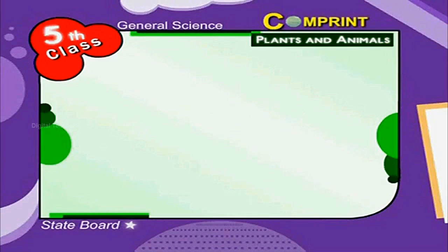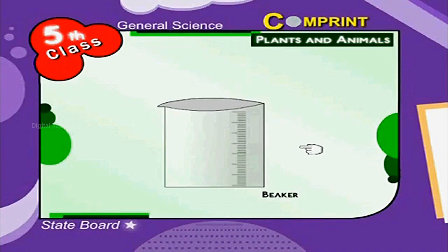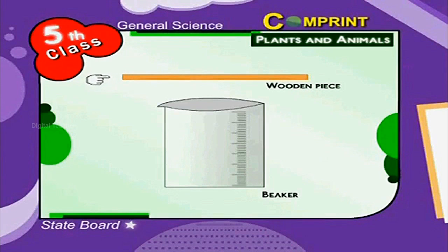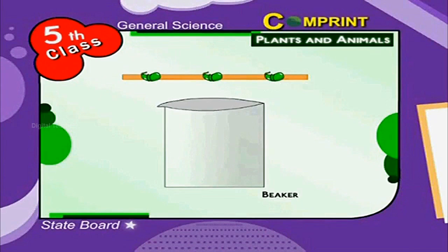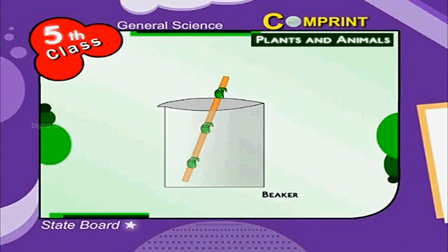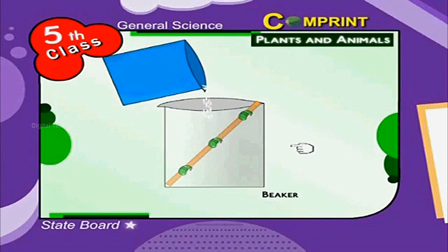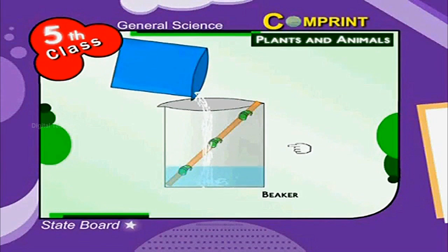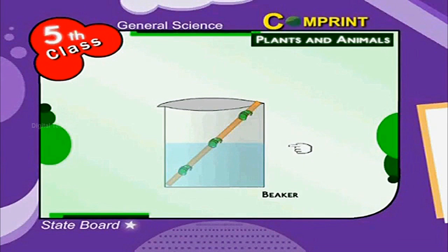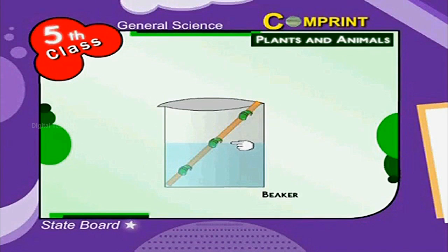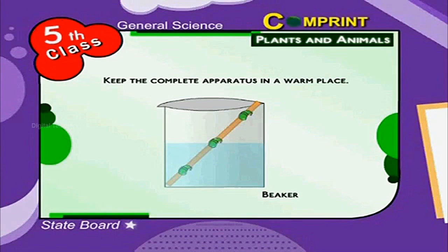Look at the pictures. Take an empty beaker. Take a small flat wooden piece. Tie three bean seeds apart in a row. Place the wooden piece in the beaker as shown in the figure. Pour water into the beaker till the second seed is half sunk. That is, one seed is completely sunk in water, one seed is half sunk, and the third one is completely in air. Keep the complete apparatus in a warm place.